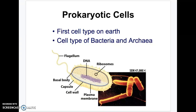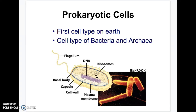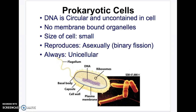Prokaryotic cells are theorized to be the first cell on earth because they are so simple. They have the basic structures: flagella which help them swim, cell walls, cell capsules, and cell membranes on the outside. On the inside they have cytoplasm, ribosomes, and DNA — that's it. There's no nucleus; it's called naked DNA. The DNA is circular. They don't have membrane-bound organelles — ribosomes don't have membranes — so no membrane-bound organelles like a nucleus.